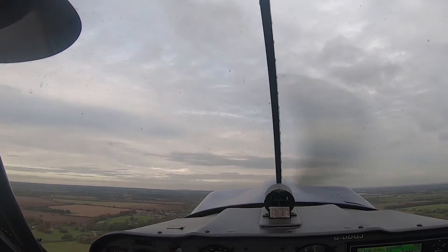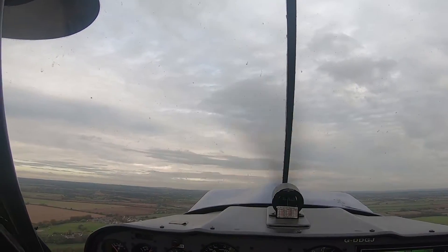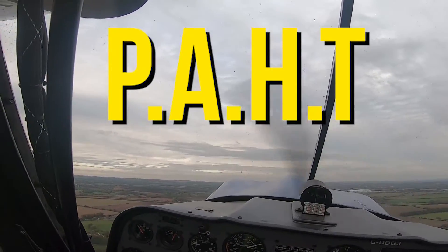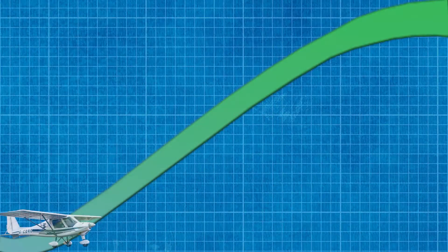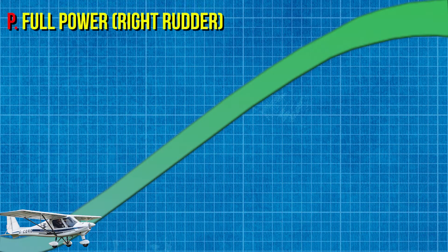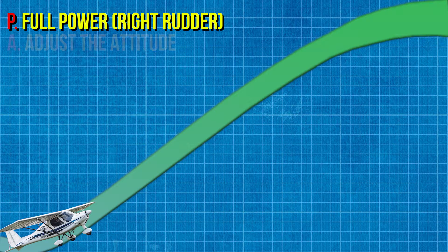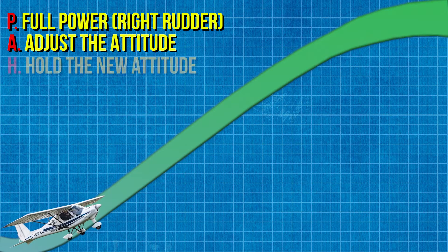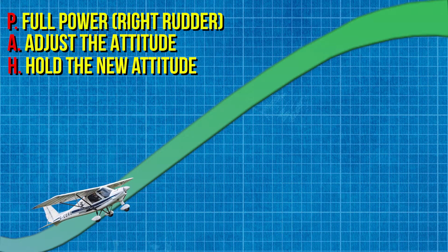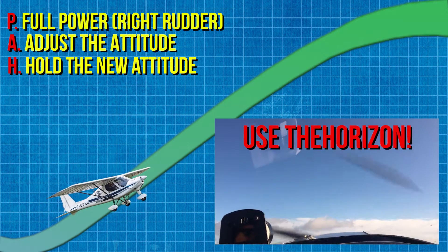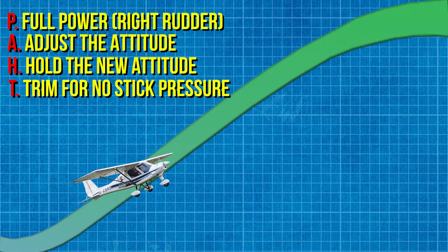It is now time to enter a climb, and we are going to climb to a predetermined altitude. We are going to use the acronym PAT: Power, Attitude, Hold and Trim. First off, we will add full power, making sure to add right rudder to counter the slipstream effect. Raise the nose attitude into our climb. Hold the nose attitude for our desired airspeed, which will be 70 knots, and stabilize by holding the nose in that position. Once there, trim off any pressure if there is any in the stick.